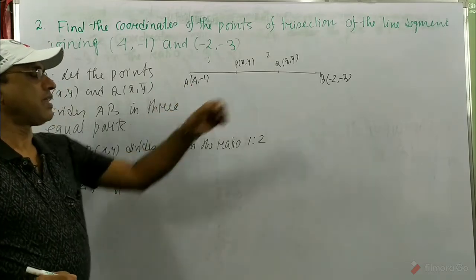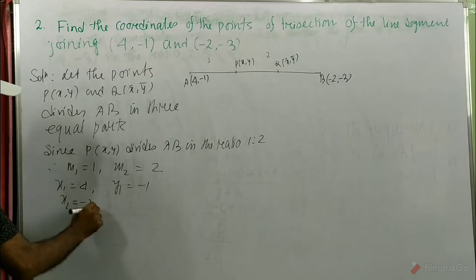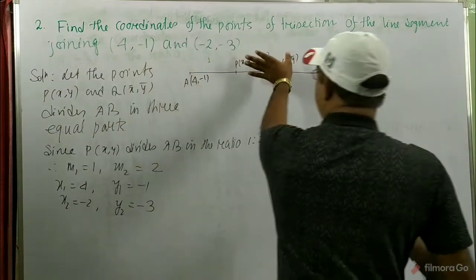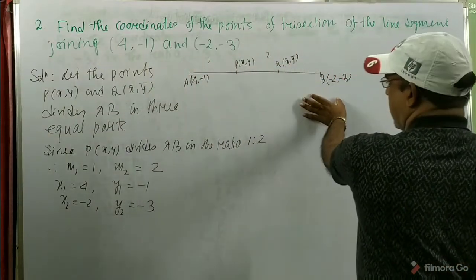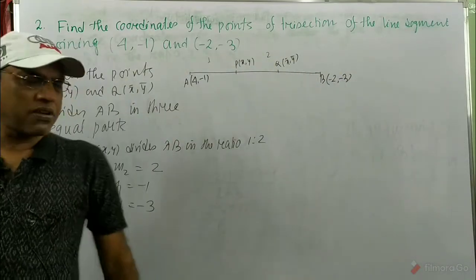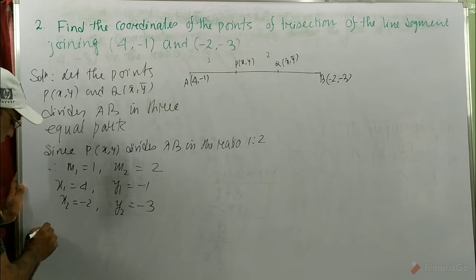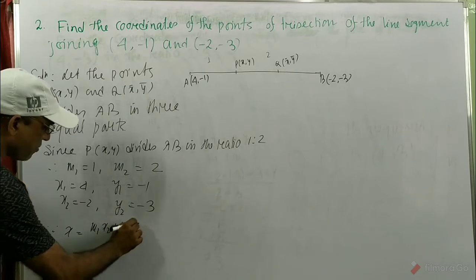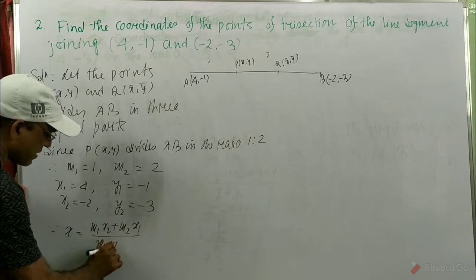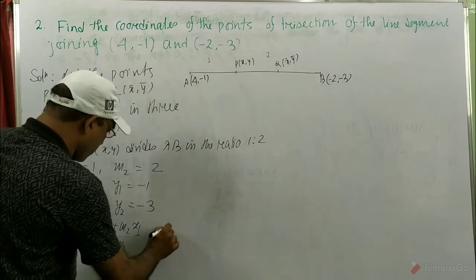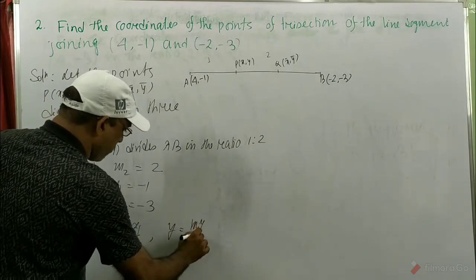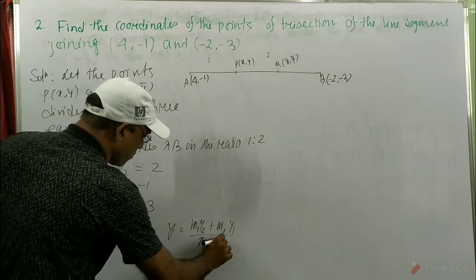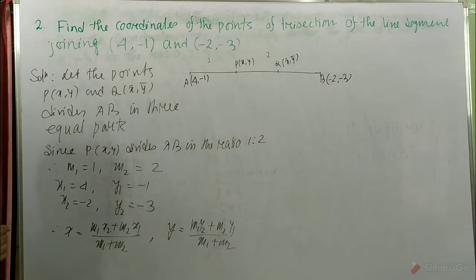So x1 = 4, y1 = -1, x2 = -2, y2 = -3. Now we consider m1 = 1, m2 = 2. Now we know the section formula: x = (m1·x2 + m2·x1) / (m1 + m2) and y = (m1·y2 + m2·y1) / (m1 + m2). This is the section formula.